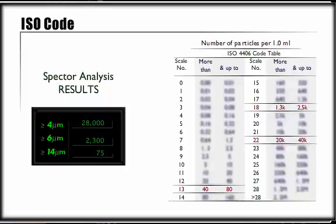The first number, 22, indicates that the number of particles greater than or equal to 4 micron in size is more than 20,000 and less than or equal to 40,000 per milliliter.